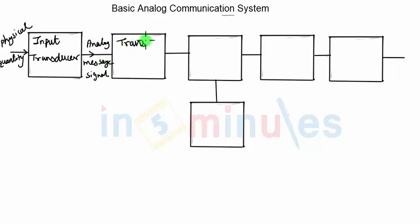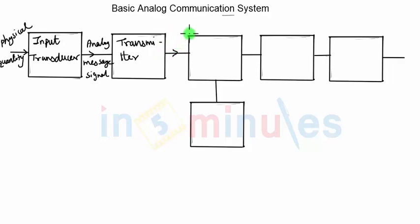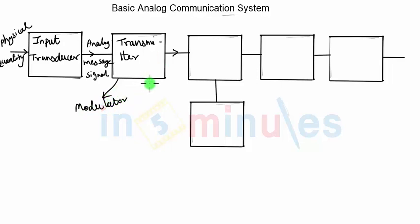The analog message signal is given to the transmitter of the analog communication system. The transmitter is a complex block with many circuits inside. It takes the analog message signal and converts it into a form suitable for transmission toward the receiver side, since the analog message signal in its original form may not be transmitted directly. The transmitter mainly consists of a modulator.